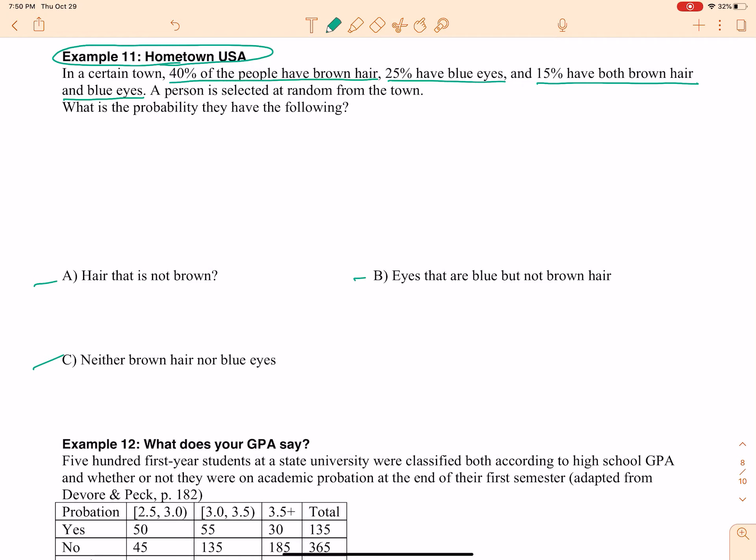Okay, there's a couple of different ways you can set this up. If you didn't recognize it immediately, you can use a Venn diagram for this one. I'm going to let this circle be brown hair, and this circle be blue eyes. All right, and it looks like I've got 40% of people have brown hair. That is this whole circle. 25% have blue eyes,